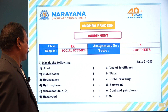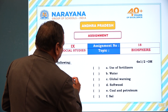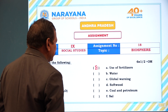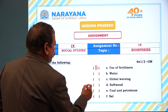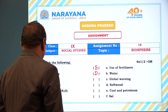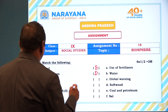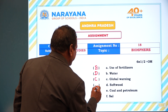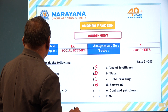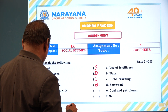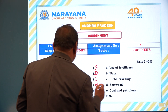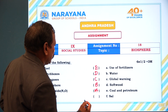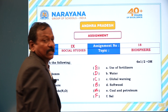Let's now match the following. Fuel relates to coal and petroleum — E. Matchboxes will be related to softwood — D. House gases are related to global warming — C. Hydrosphere is related to water — B. Nitrous oxide is related to use of fertilizers — A. And hardwood is related to soil — F. These are the answers for the matching.